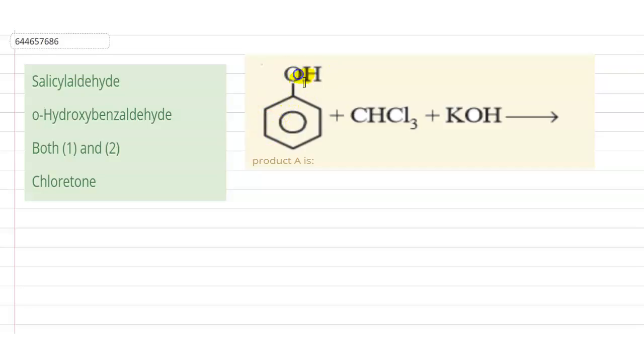Hello, so our question is we are having the phenol which reacts with CHCl3 in presence of the base KOH. Then we have to find what will be the product.